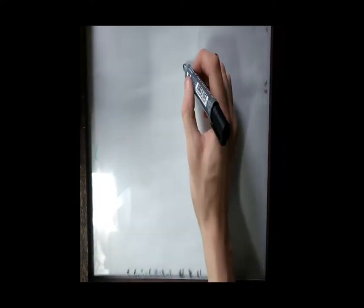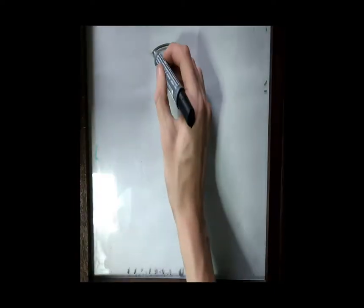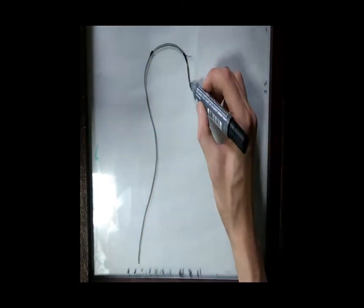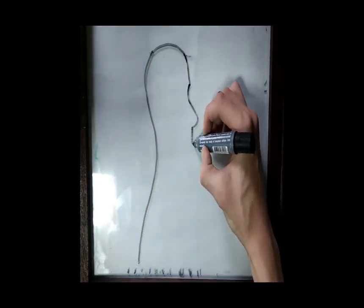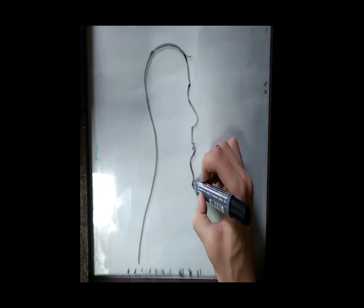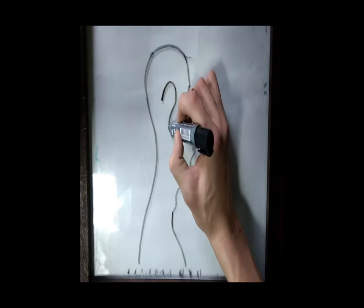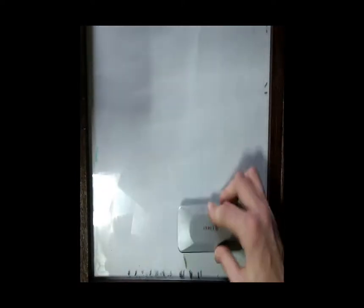Werner decides to wager everything on one card: electrical telegraphy, the possibility of sending messages quickly over long distances. A market of the future. But he also knows he can't succeed on his own. He needs a partner.